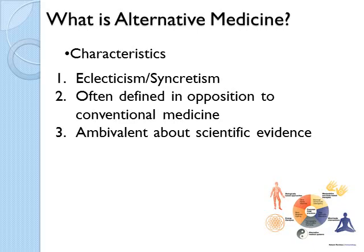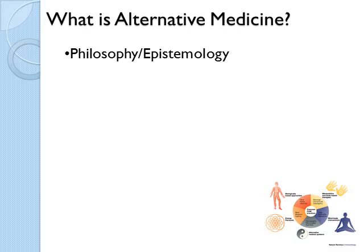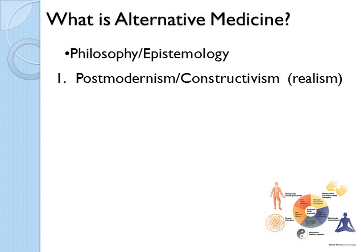Philosophically, what is alternative medicine? In contrast to realism — the notion that the universe exists independent of human perceptions and can be understood through our senses and empirical evaluation — there is a strong strain of postmodernism or, more specifically, constructivism. Postmodernism, in this context, means the idea that our models of reality, our ways of understanding things, the metaphors and language we create to describe the world, are so heavily influenced by our pre-existing beliefs that they cannot be viewed as true representations of how the world actually is.